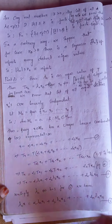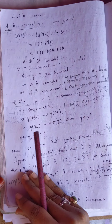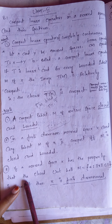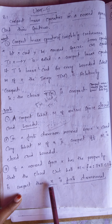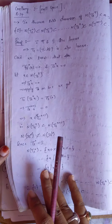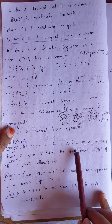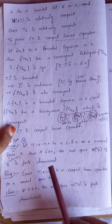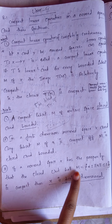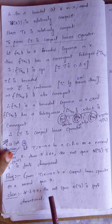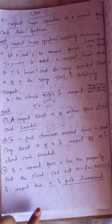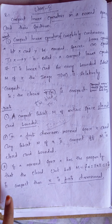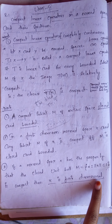Starting with a known result: if a normed space X has the property that the closed unit ball is compact, then X is finite dimensional. We have to show that the null space N(T_lambda) is finite dimensional, so we will show that its closed unit ball M is compact, and then it is finite dimensional.